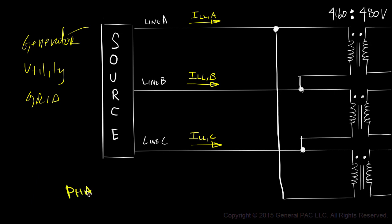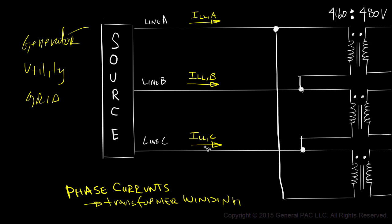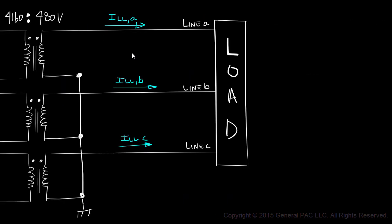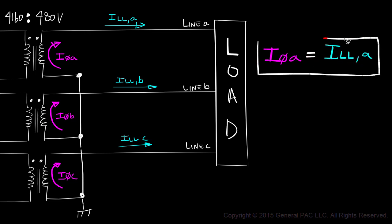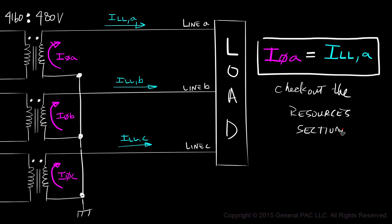Let's now talk about phase currents. We understand that phase currents flow through transformer windings. Let's start on the secondary side where our transformer is connected in Y. We should expect phase A current to come from winding A and flow to our load. Similarly, phase B current comes from winding B and flows to our load, and phase C current comes from winding C and flows to our load. For a Y-connected transformer, we should expect phase A current and line-to-line current A to be the same. Check out the resources section for additional information.